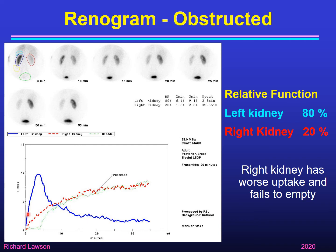This curve for the left kidney shows a good rise early on, indicating good uptake and normal emptying. However, when we draw a region of interest around the right kidney shown in red, we see it rises less steeply than the left kidney, indicating less good function — the computer calculates that this right kidney has only 20% of the patient's total overall renal function. We also see that the right kidney curve goes up continuously and doesn't empty at all, showing much worse emptying as well as worse uptake.